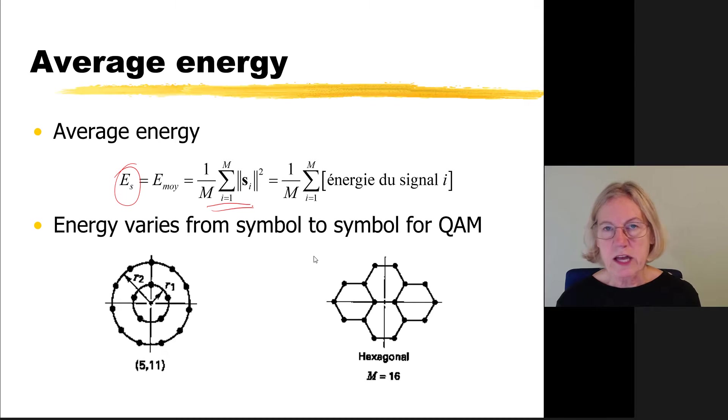You'll notice that in QAM, unlike PSK and FSK, the two examples we saw previously, in those, all the symbols have the same energy. Let's look at this example. In this example, one collection of five symbols has one energy because it's at one distance from the origin, but the other 11 have a different energy. In the hexagonal one, you can see it's even more complex. There are many different distances from the origin. Symbols have different energies. So that's why it's terribly important to base things on the average energy because otherwise it's very ambiguous.